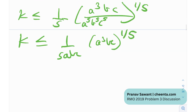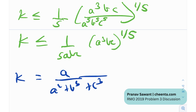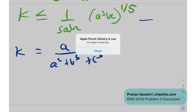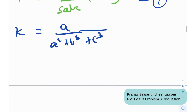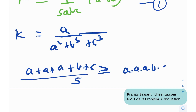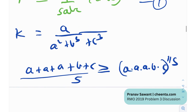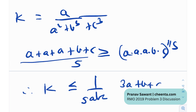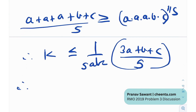To reiterate: k was that complicated expression equal to a/(a² + b³ + c³). Now we notice by AM-GM that (a + a + a + b + c)/5 ≥ (a·a·a·b·c)^(1/5) = (a³bc)^(1/5). Therefore, k ≤ (1/(5abc)) · (a³bc)^(1/5). And since (a + a + a + b + c) = (3a + b + c), applying AM-GM: k ≤ 1/(5abc) · (3a + b + c)/5.